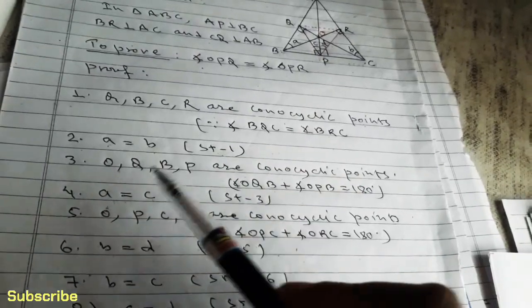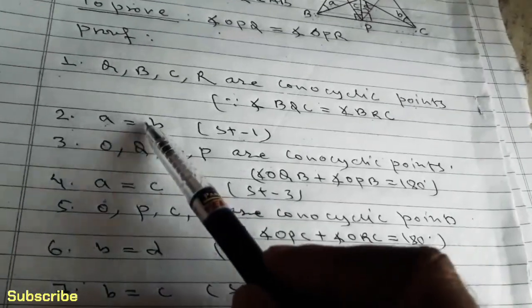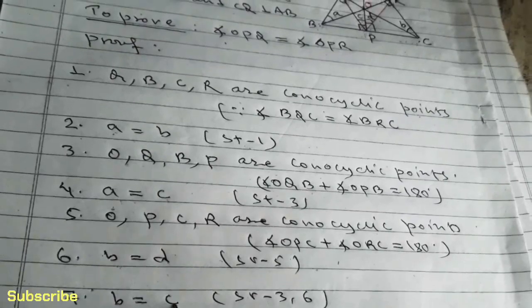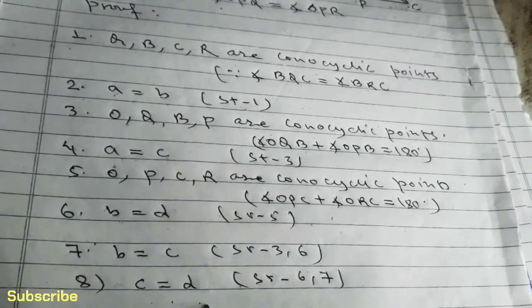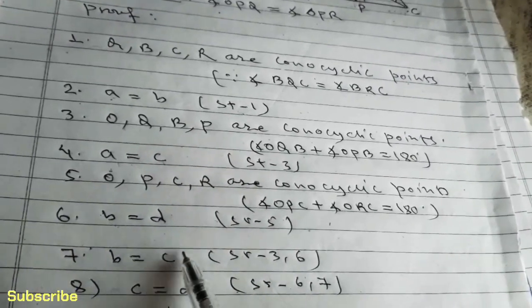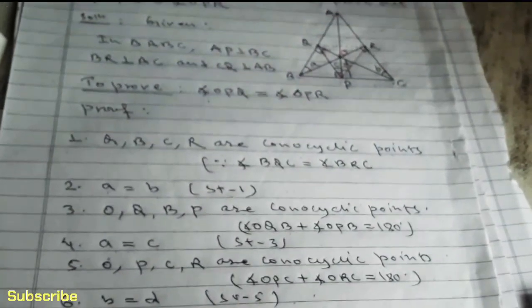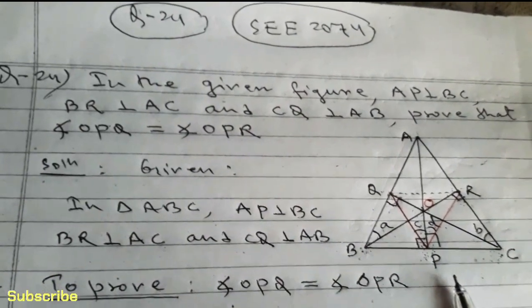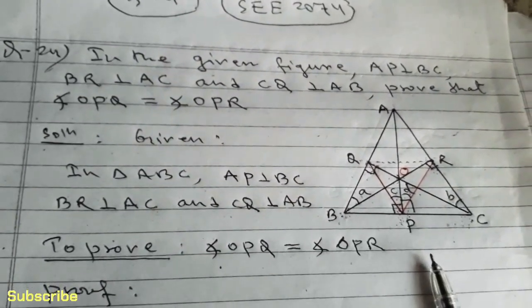So A equals B and B equals D, meaning we can write A equals D. Combining statements two and four gives B equals C, and combining statements six and seven gives C equals D. Therefore angle OPQ equals angle OPR — this is the proof of question number 24. I hope you have understood this proof, which is one of the most important and frequently asked in exams. Thanks for watching, and we'll meet again in the next video with new content. Till then, bye, have a nice day.